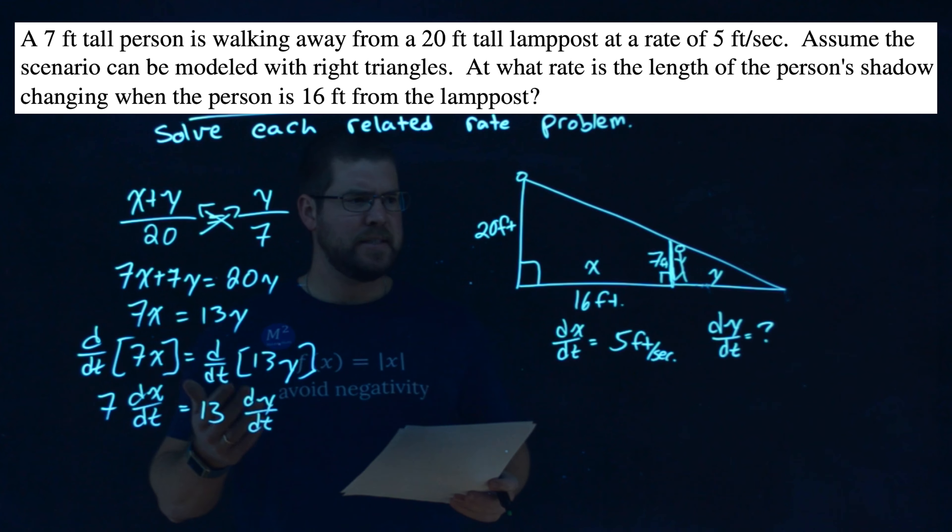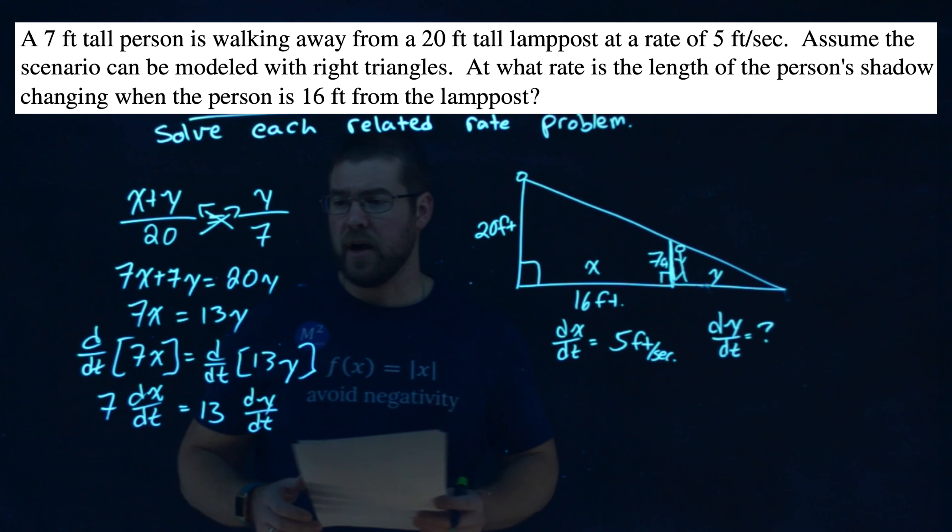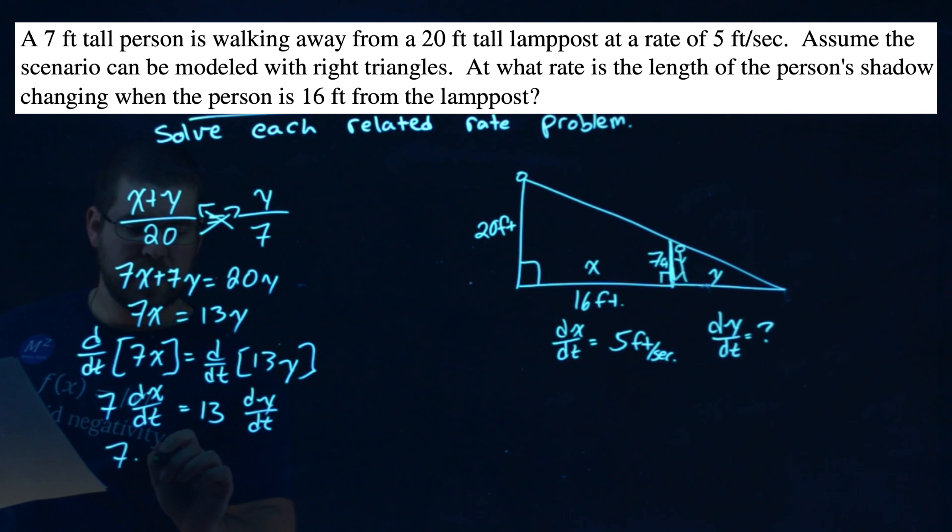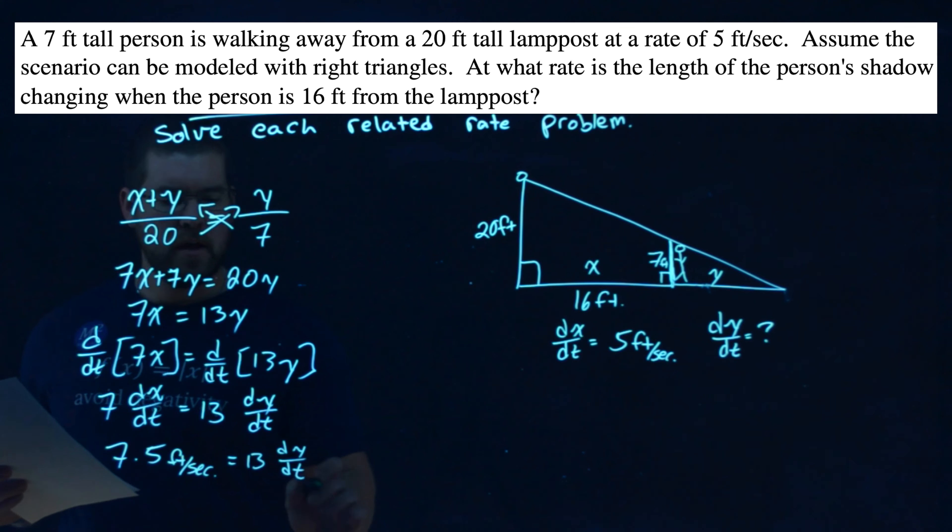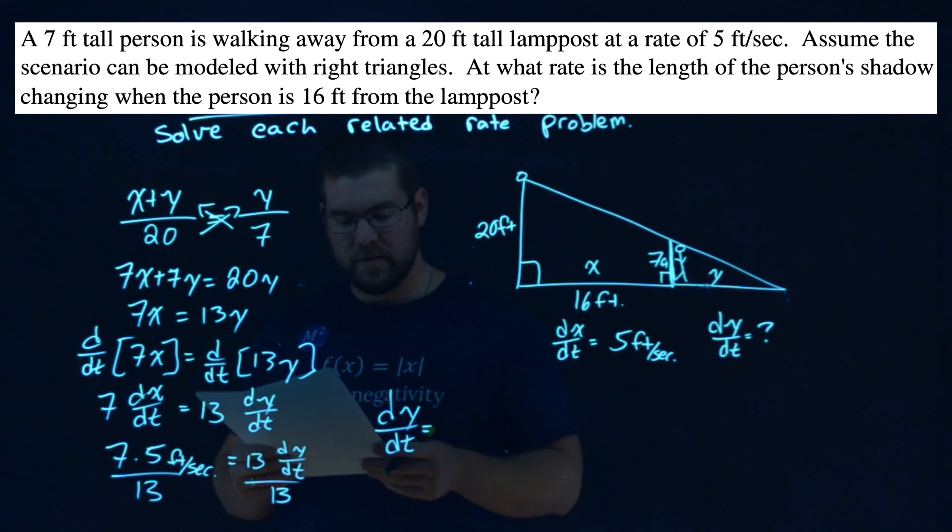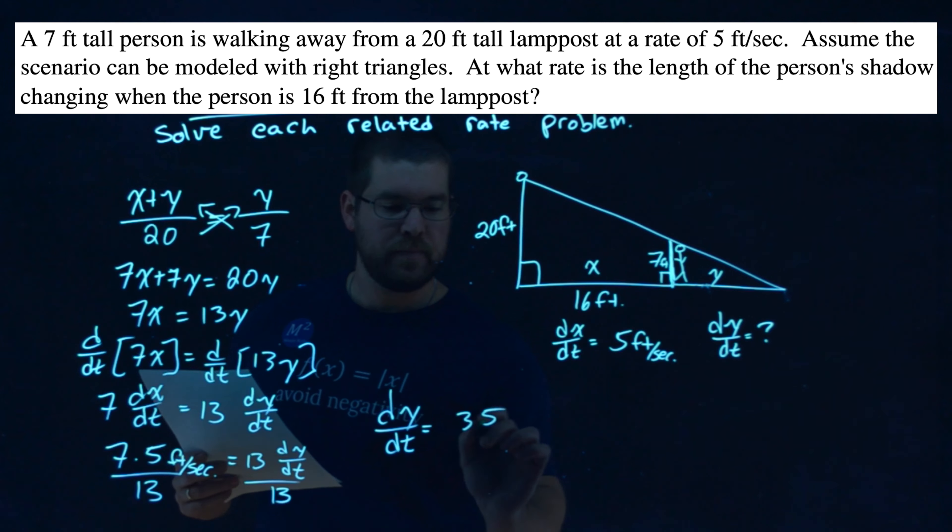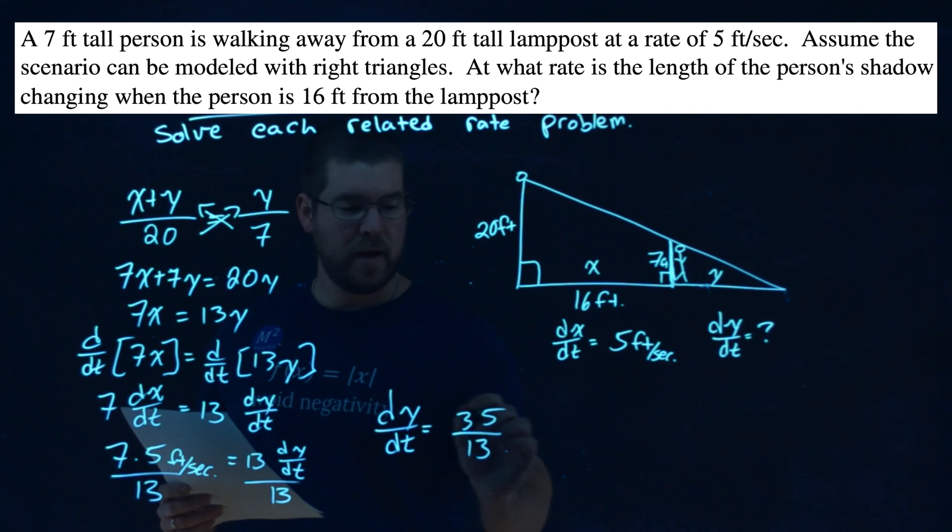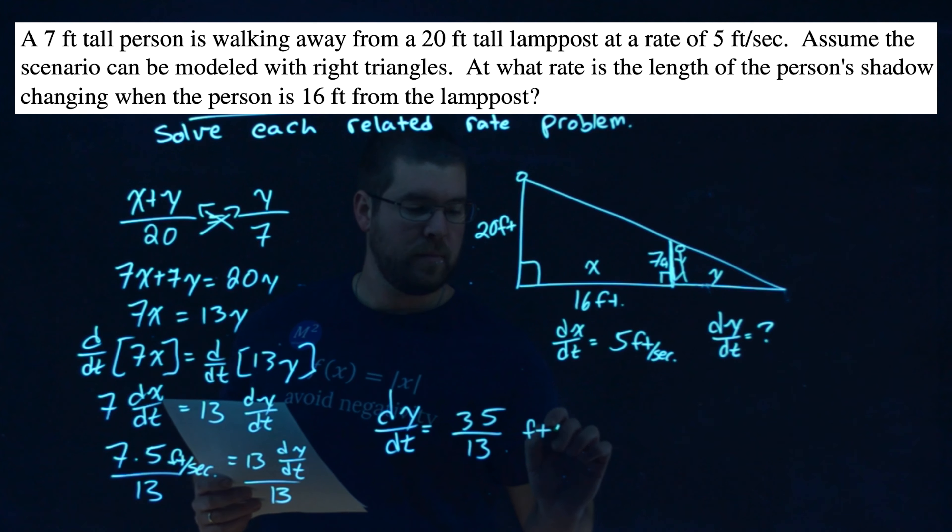And we want to get dy/dt really by itself. Let's plug in what we know. We know dx/dt is 5. So we have 7 times 5 feet per second equals 13 dy/dt. Divide both sides by 13 here, and what do we have? dy/dt is equal to 7 times 5 is that 35 over 13, and the rate is still that feet per second.